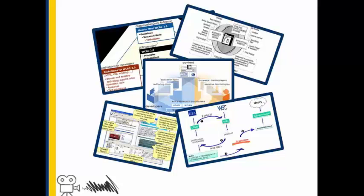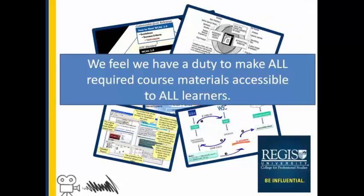Some groups state that the law requires to always provide accessible content, while others lean on the side of accessibility only needs to be done when a request is officially filed by a disabled learner. In the College of Professional Studies, we feel we have a duty to make all required course materials accessible to all learners.